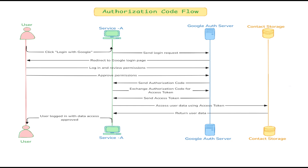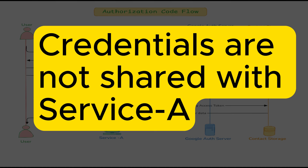Let us see step by step how this flow works. First, you click on login with Google or any other service on the website. Then the website sends a request to the service you have picked, like the Google authorization server. You are redirected to Google's login page where you log in and are shown a permission page displaying the data — like your name and email — that the website wants to access. Sometimes you can even choose which data you want to share. Once you approve the access, Google sends an authorization code back to the website. The website then sends that authorization code back to Google in exchange for an access token, and finally uses this token to access your permitted data from the Google server.